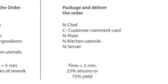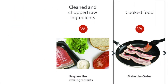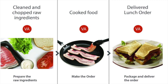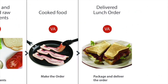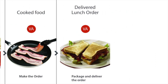In step two of creating a process map, you list all the outputs for each process step. In our example, the first step is to prepare food — its output is clean and chopped raw ingredients. The second process step is to make the order, with the output being cooked food. The last step is to package and deliver the order, with the output being a plated or properly packaged meal, ready to be eaten.